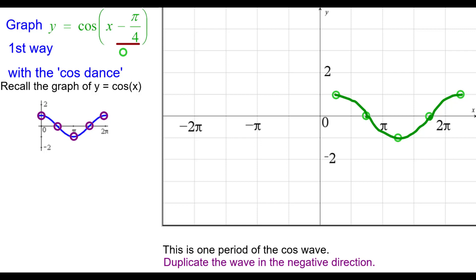Let's duplicate that wave in the negative direction. How we will do that is go back a period from this starting point right here, which will be at (negative 7 pi over 4, 1).